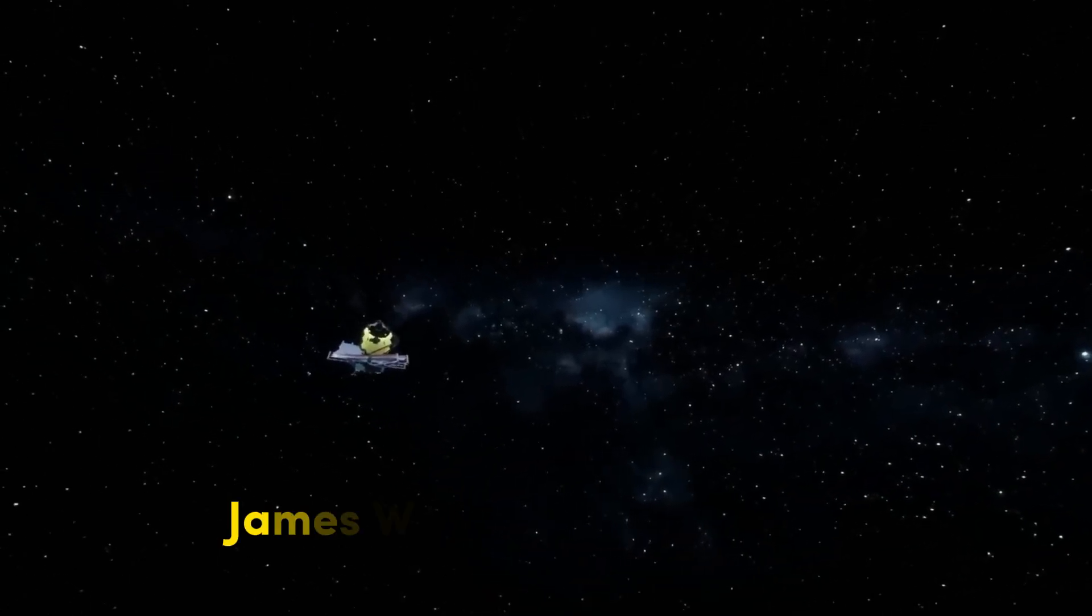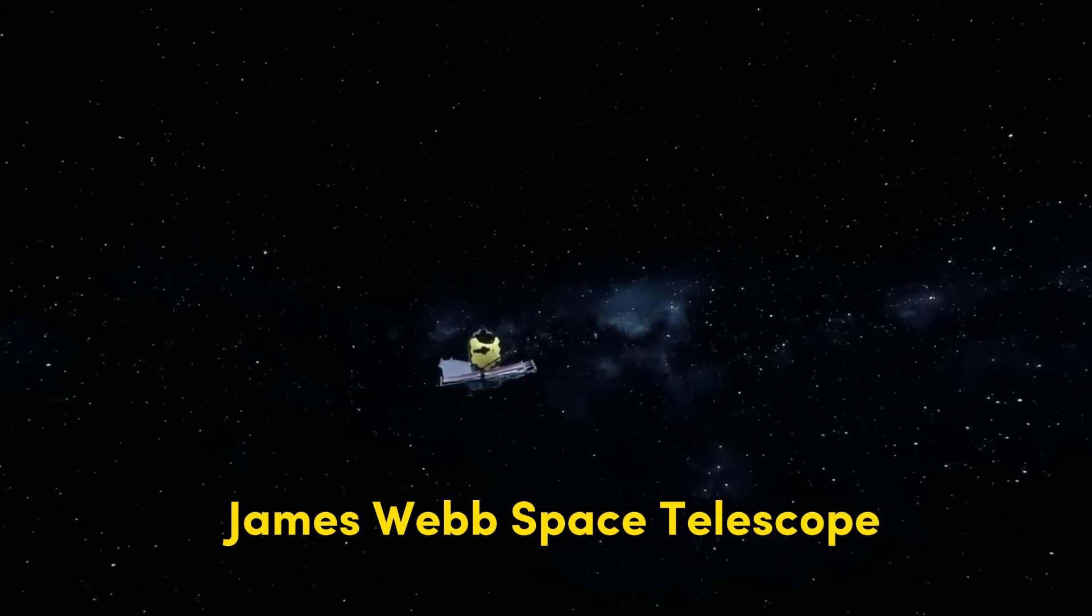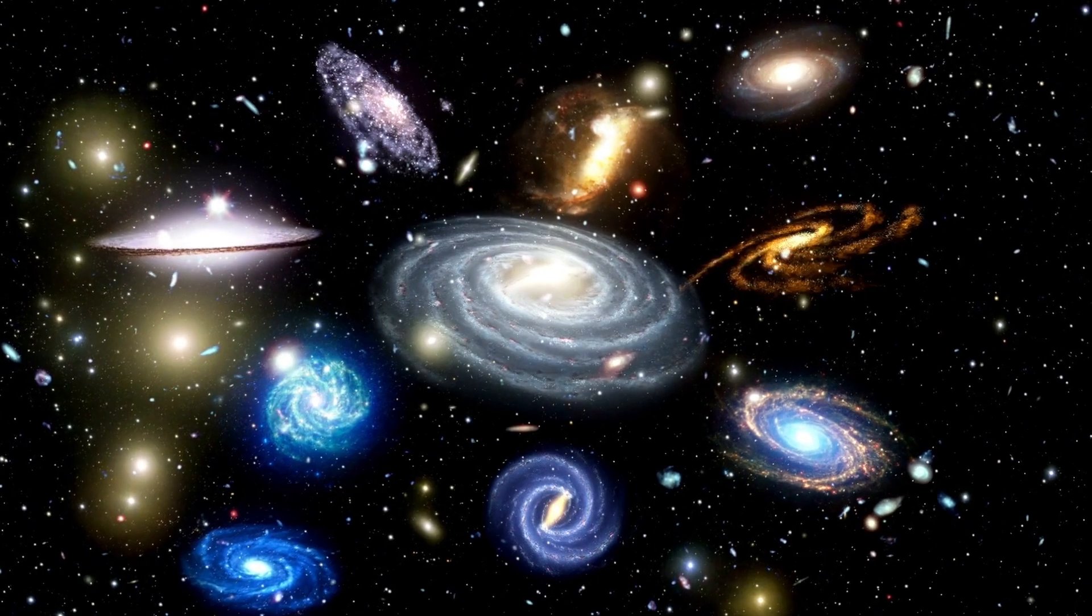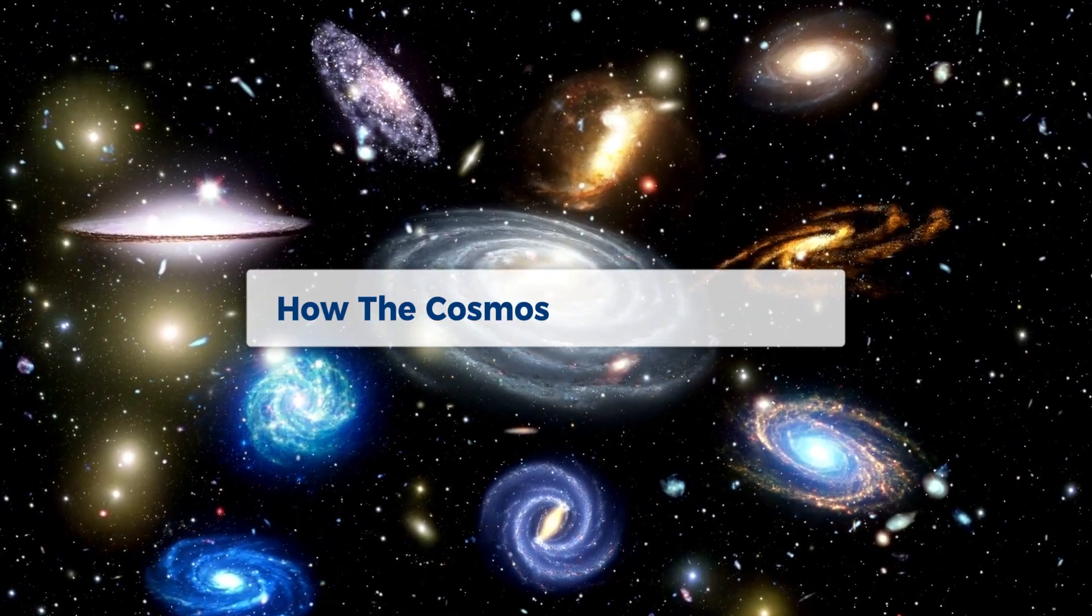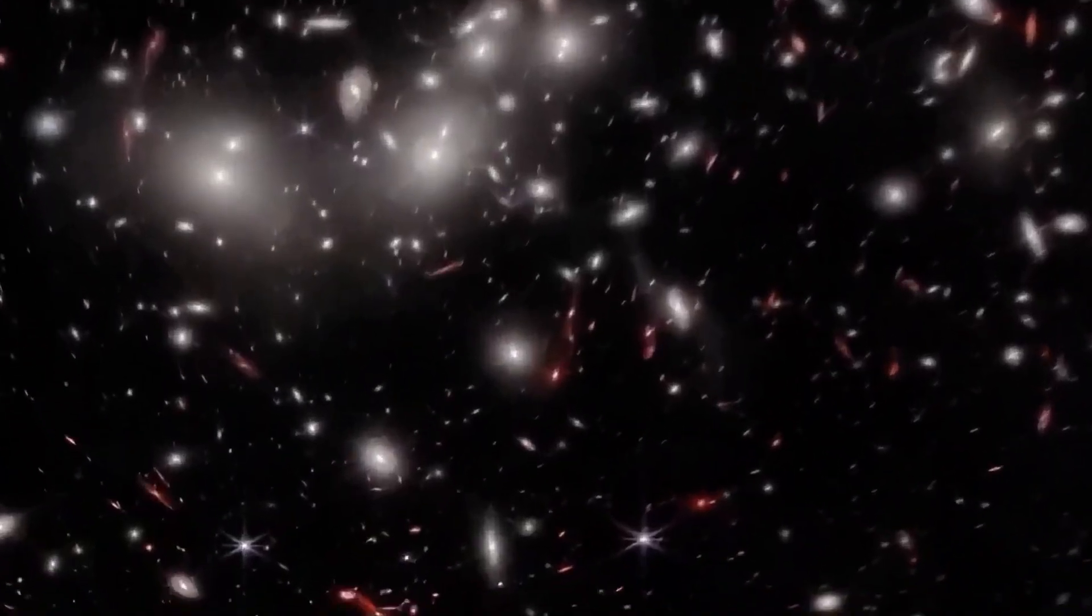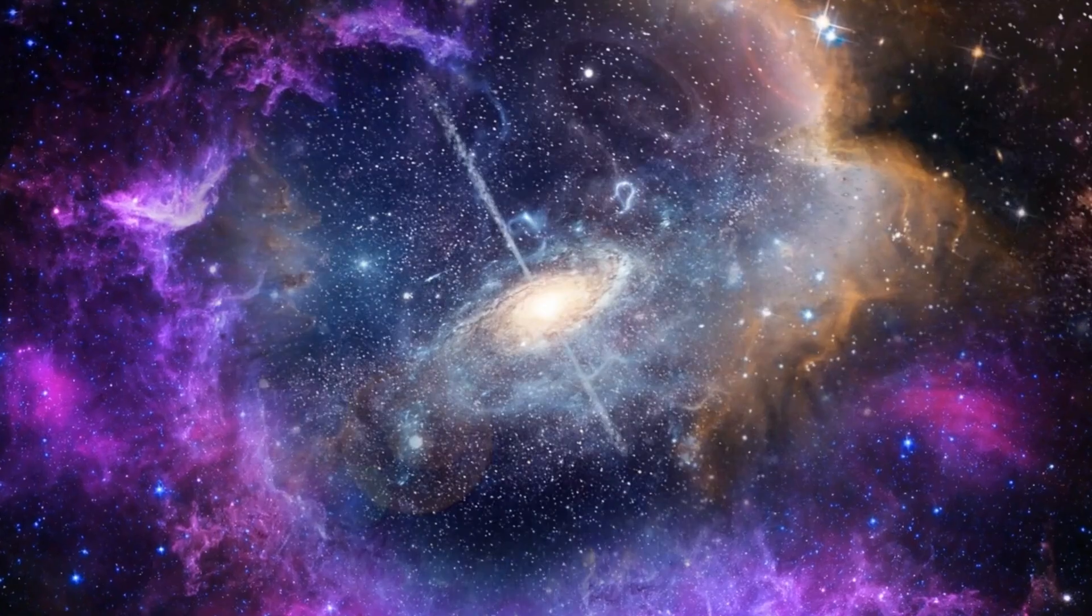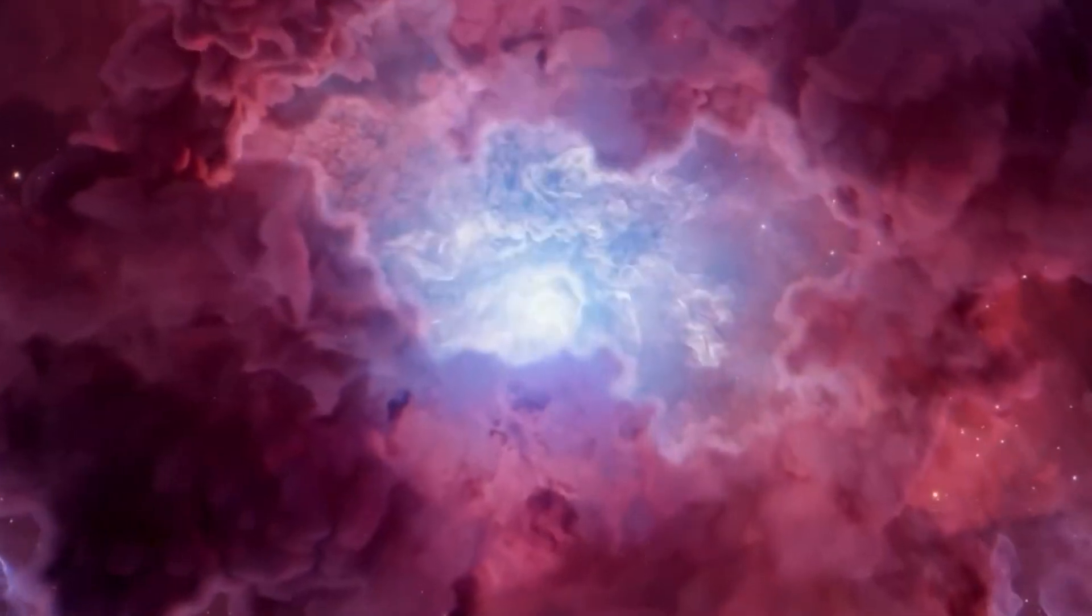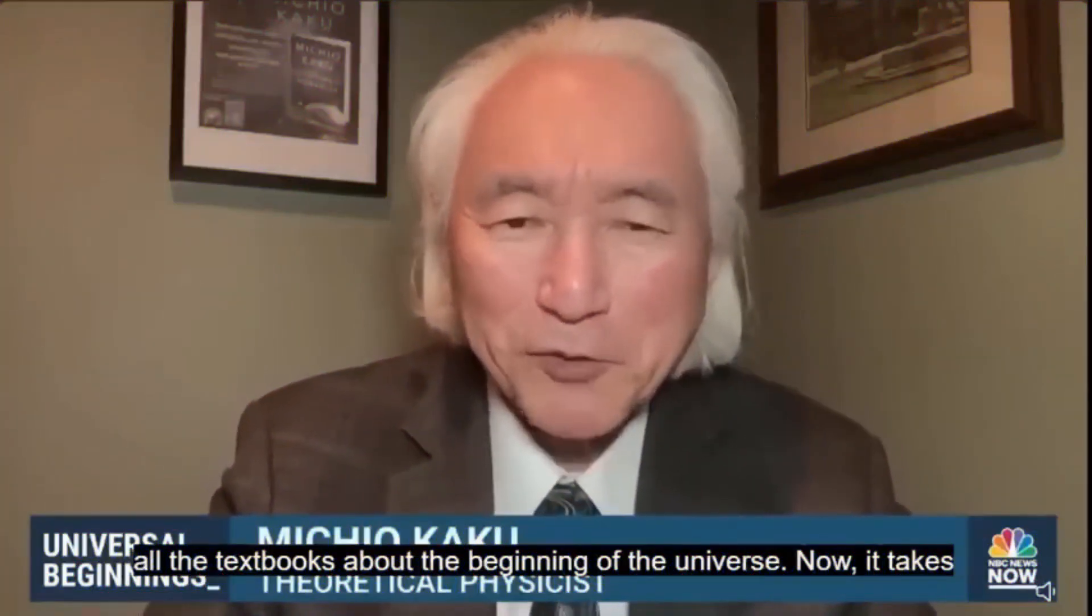Everything is in a tizzy because of the James Webb Space Telescope. A galaxy like our Milky Way, which has 100 billion stars and is billions of years old, requires an enormous amount of time to form. It takes many billions of years to create a galaxy like the Milky Way.